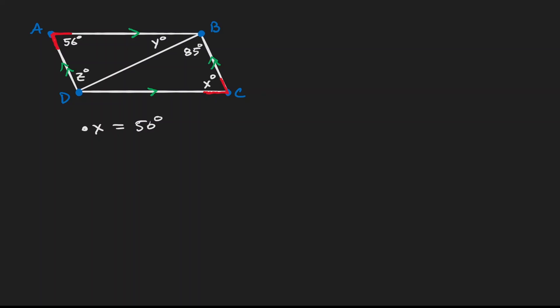Another perspective is to extend the lines. What would happen if we extend the line of BC? That line is parallel to the opposite side. We can think of this diagonal as being a transversal. If that line is a transversal, then the angle of 85 is an alternate interior angle to angle Z. That was a faster way to identify the value of Z — Z is equivalent to 85. Now we can think of this as being a triangle and use the properties of the interior angles.